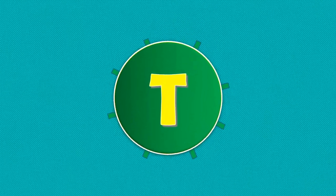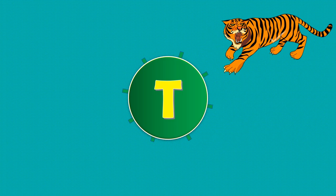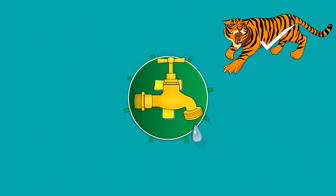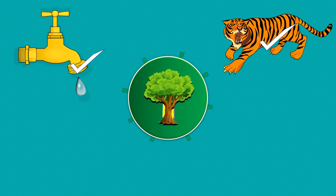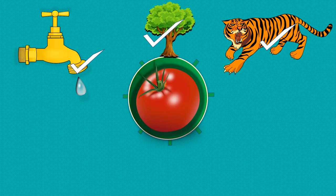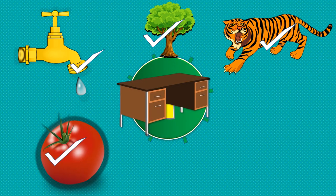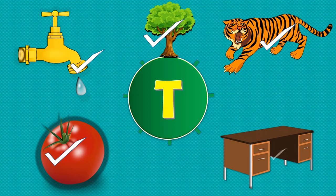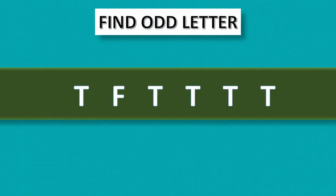T. T for tiger, correct, yes. T for tap, correct, yes. T for tree, correct, yes. T for tomato, correct, yes. T for table, correct, yes. T for leaf — no, it's wrong. Find odd letter.